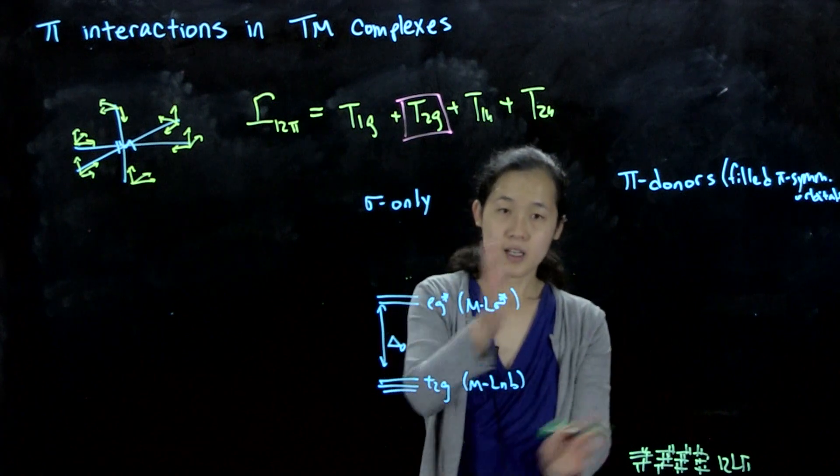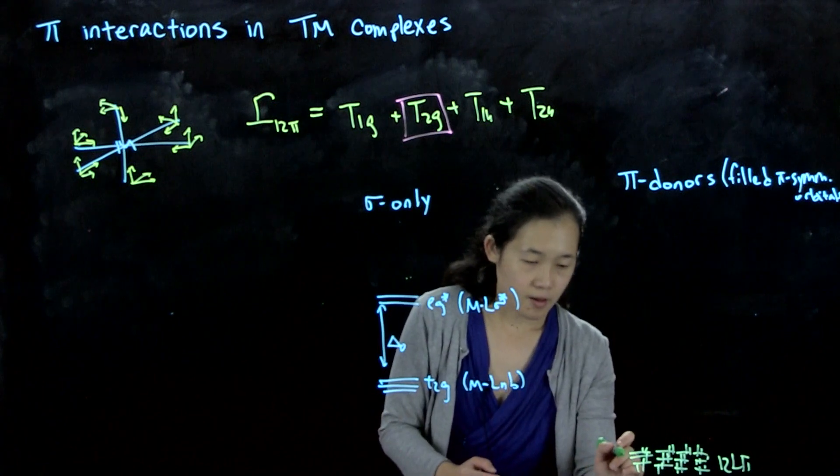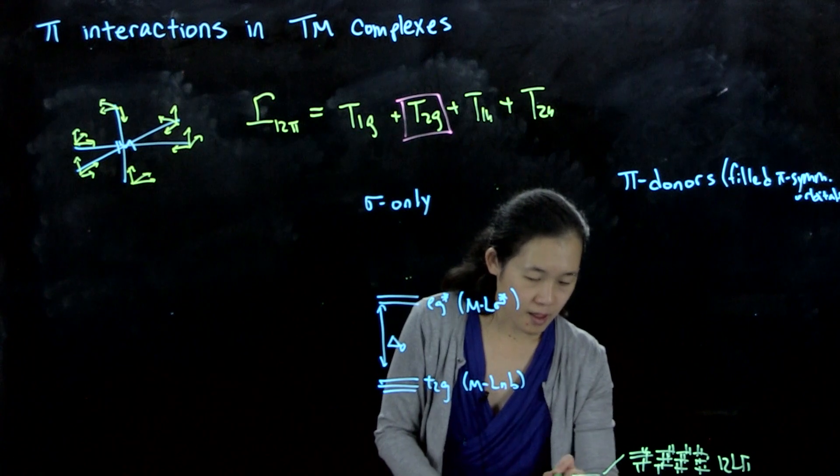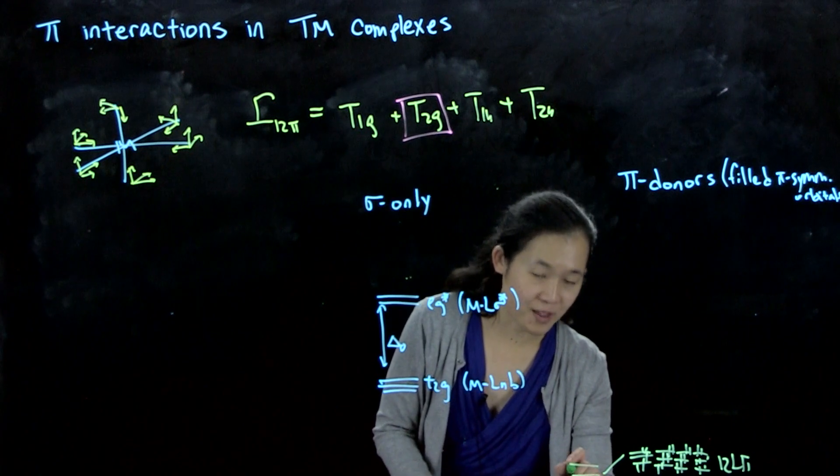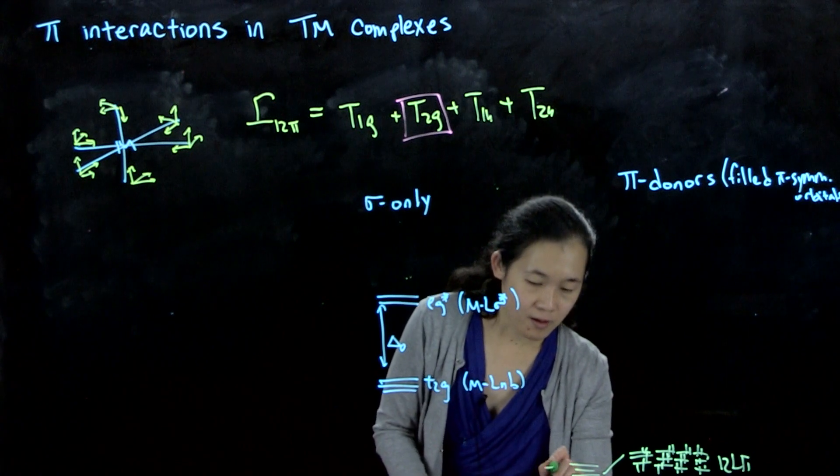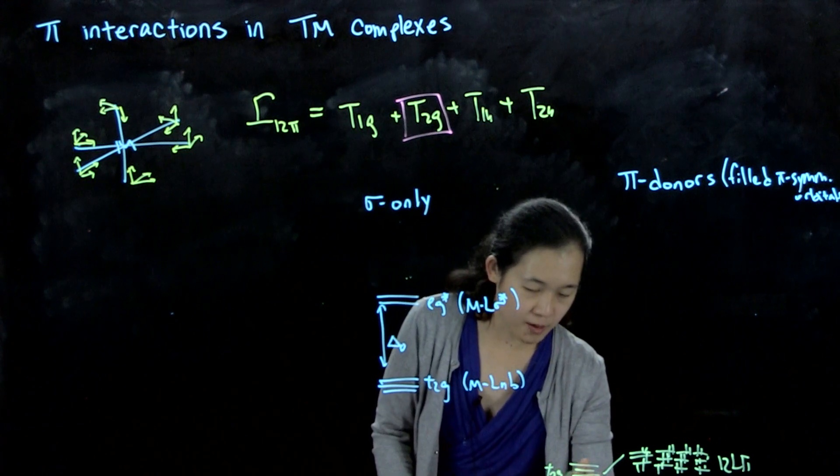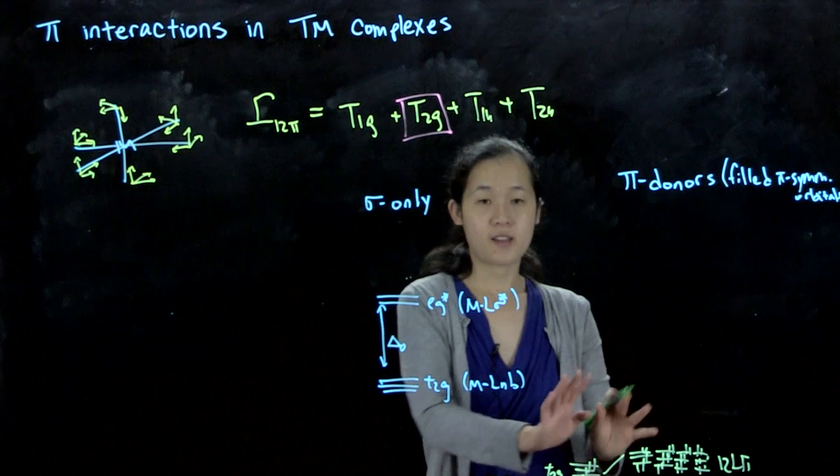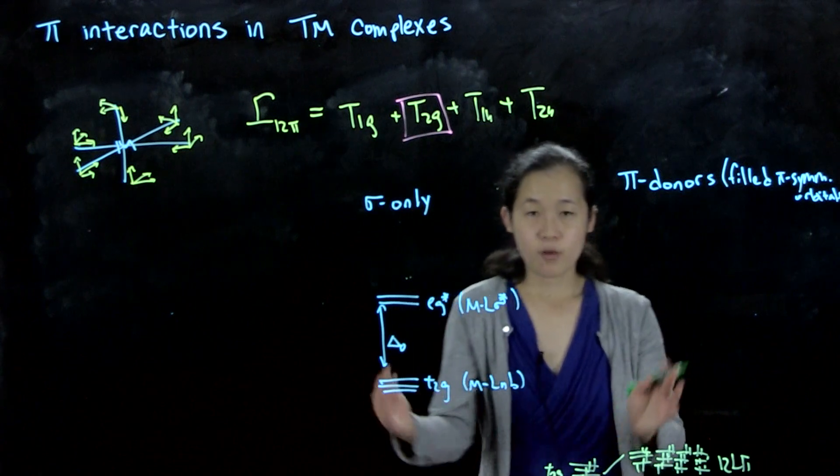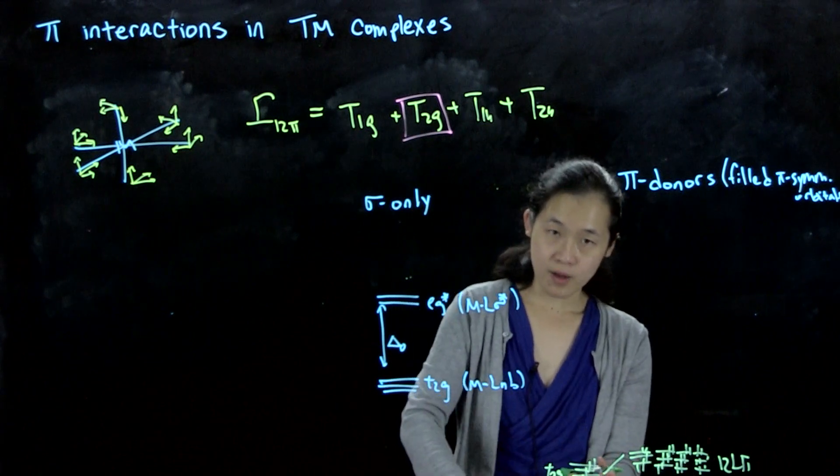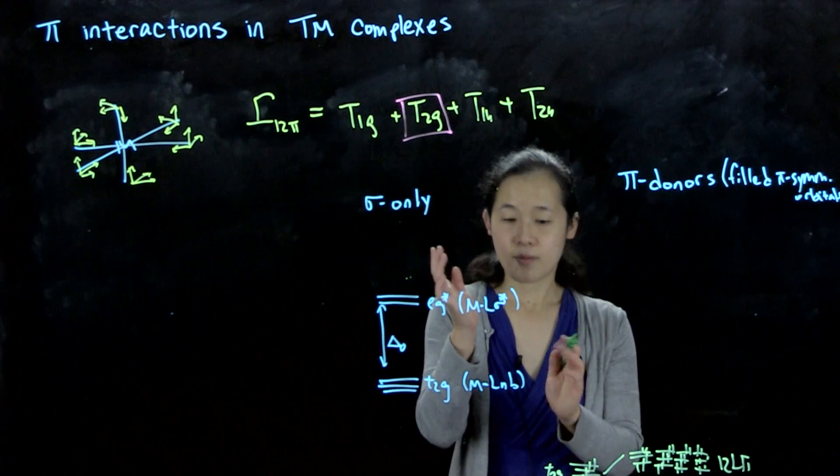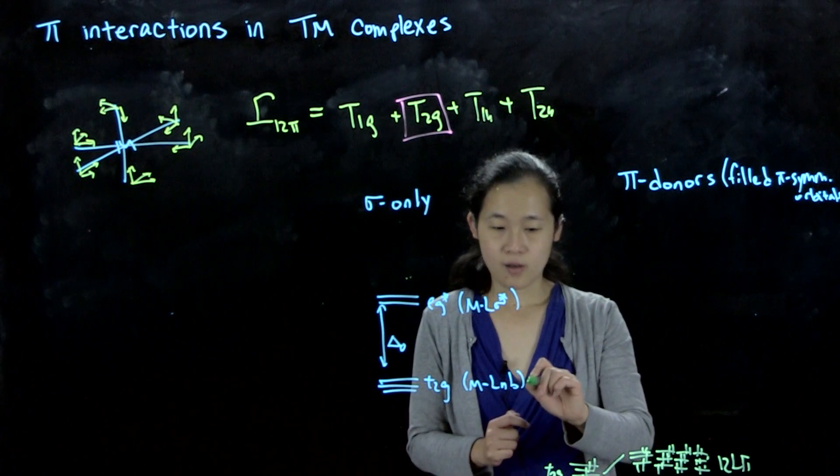That means that we will form bonding, anti-bonding interactions. These go down. So here's our filled T2G, the T1U is also there. That's our ligand-centered orbital. But what that means is that we form bonding. This is lower. That's the bonding ligand-centered. The metal-centered orbitals must therefore be anti-bonding. So then this will have to go up.